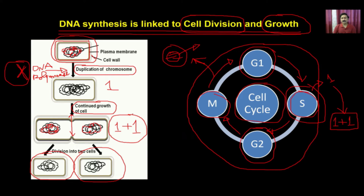Understanding this potential, scientists began exploring the enzyme responsible for DNA synthesis. Robert Kornberg discovered the first DNA polymerase responsible for DNA synthesis, making it possible to utilize that enzyme for genetic engineering.